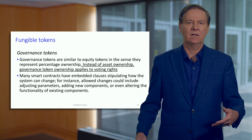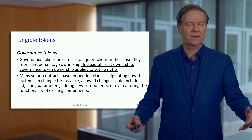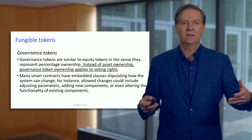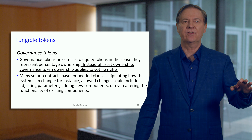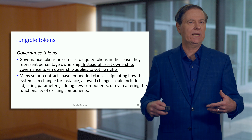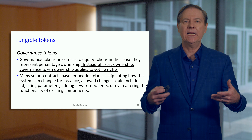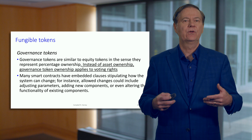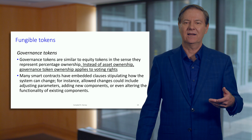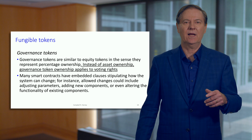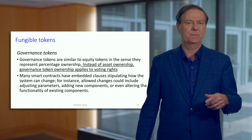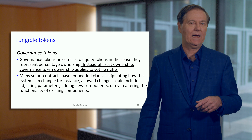Those who own the governance token are able to vote on changes. Some parameters may be variable in the smart contract. For example, if you're collateralizing a stablecoin with a very risky and volatile cryptocurrency, you have to have more than 100% collateral. If that cryptocurrency became even more volatile, governance would vote to increase the collateralization ratio. These contracts often have completely transparent parameters that can be changed by governance.